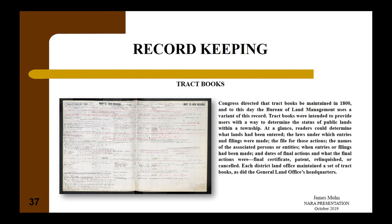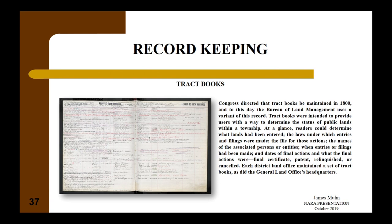Prior to July 1, 1908, the General Land Office also kept abstract register books. A set was kept by kind of entry—homestead, desert land, timber culture—and by action—original entry or final certificate—at both district land offices and GLO headquarters. Entries and proofs were entered in the order received and numbered consecutively. For original entries, the number assigned became the application number; for proofs, it became the final certificate number, which eventually became the patent number. Homesteads commuted to cash entries will be in cash register books, and those using military bounty or script will be in appropriate register books.